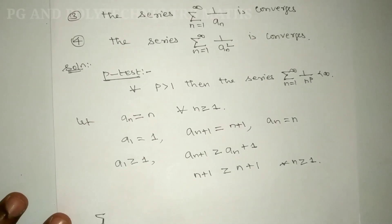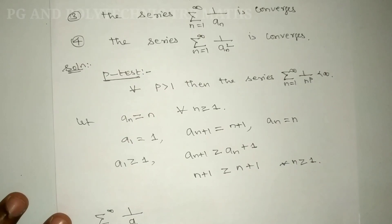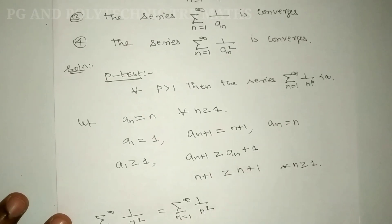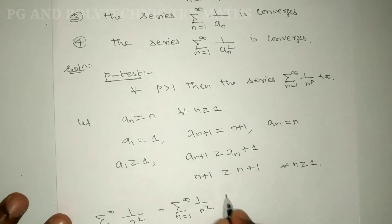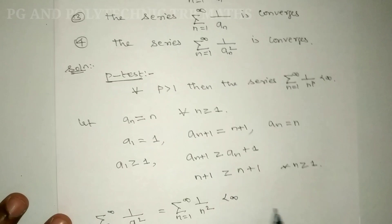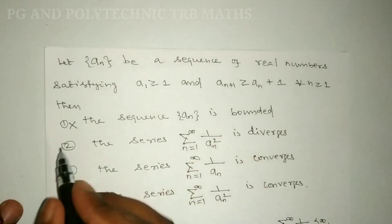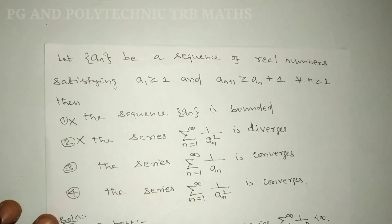Now consider Σ(1/a_n²) from n=1 to infinity. With a_n = n, this becomes Σ(1/n²) from n=1 to infinity. By the p-test with p = 2 > 1, this series converges. So Option B, which claims this series diverges, is false.